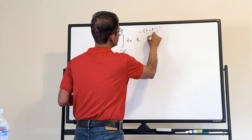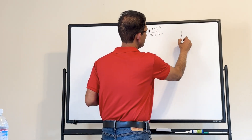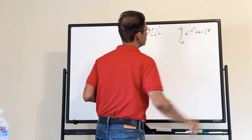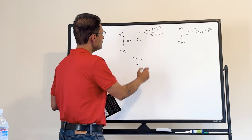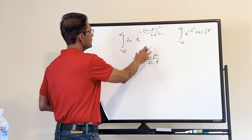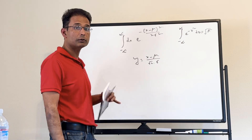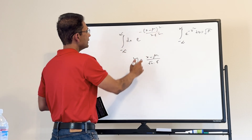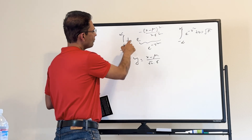For this integral we use the formula: the integral of e to the minus z squared dz equals square root of pi. We make the substitution y equals (x minus mu) over (square root of 2 times sigma), chosen so that the argument of the exponent becomes just y squared — a single squared variable term.